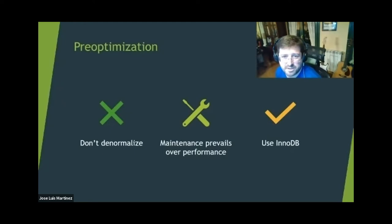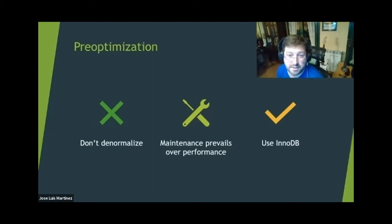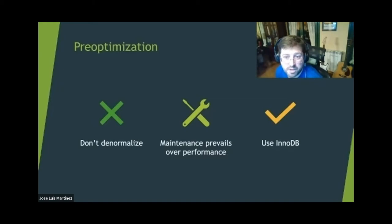Some of the worst databases had selected MyISAM as a storage engine because of preconceived performance ideas. This mostly followed a notion that MyISAM is faster than InnoDB, which was kind of true about 18 years ago. InnoDB will perform equal or better than MyISAM in 99% of cases. It is true that MyISAM has faster single-thread performance, but when concurrency kicks in — which is very natural in a database — InnoDB will be faster.